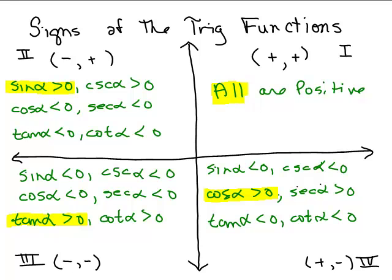Look at what we've got going around from quadrant 1 to 4: all are positive in quadrant 1, sine is positive in quadrant 2, tangent is positive in quadrant 3, and cosine is positive in quadrant 4. People remember this as: All, Sine, Tangent, Cosine — ASTC.